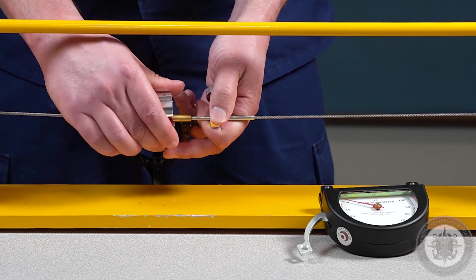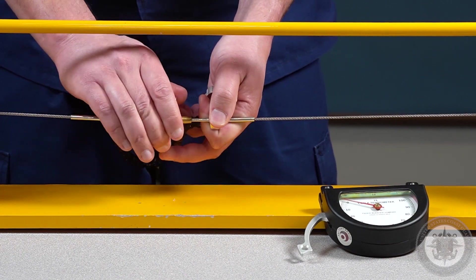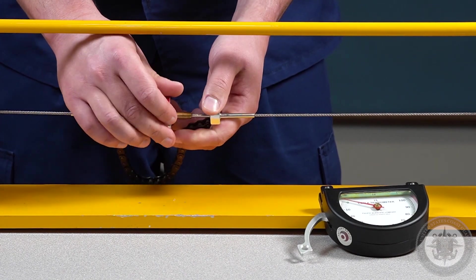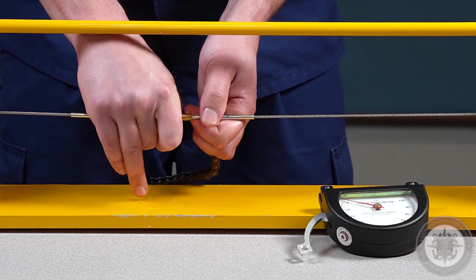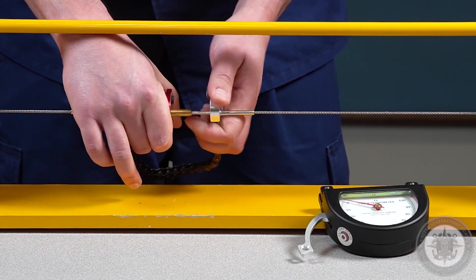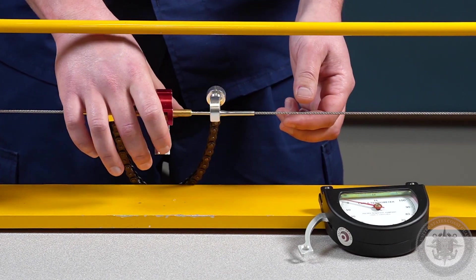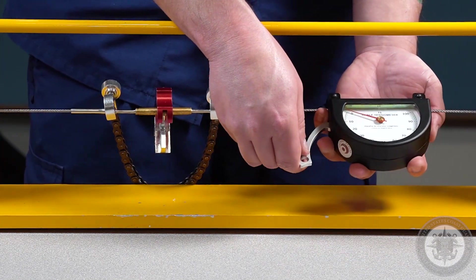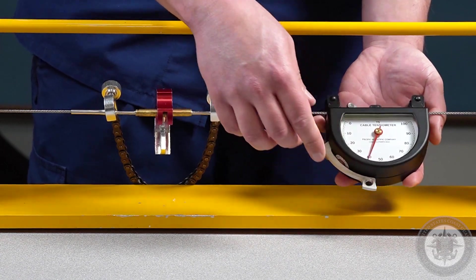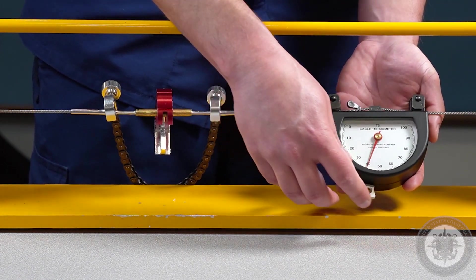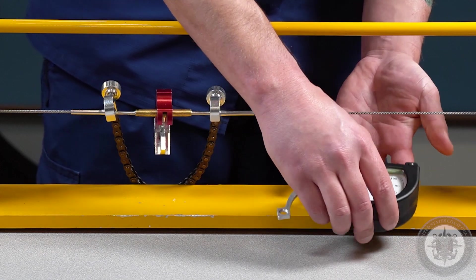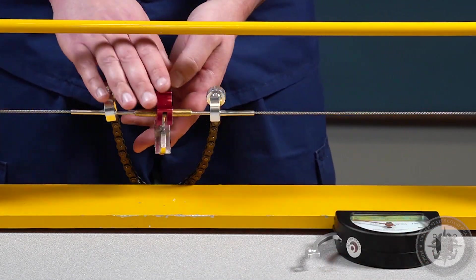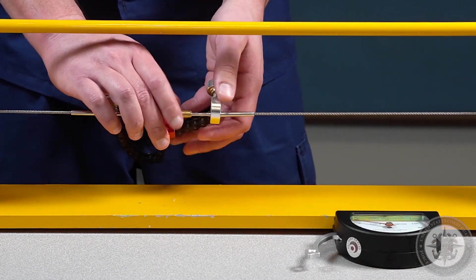And I'll just continue to add tension to the cable. I have some tension on the cable now, so I'm going to give it a quick check. Still a little low, so remove the tensiometer and we will continue to adjust the tension.